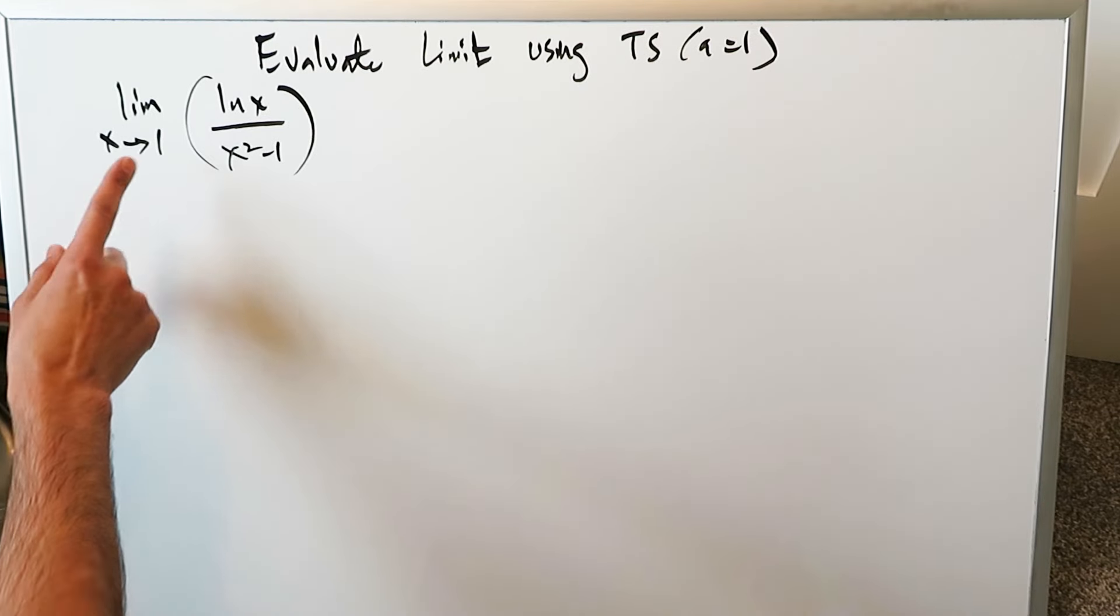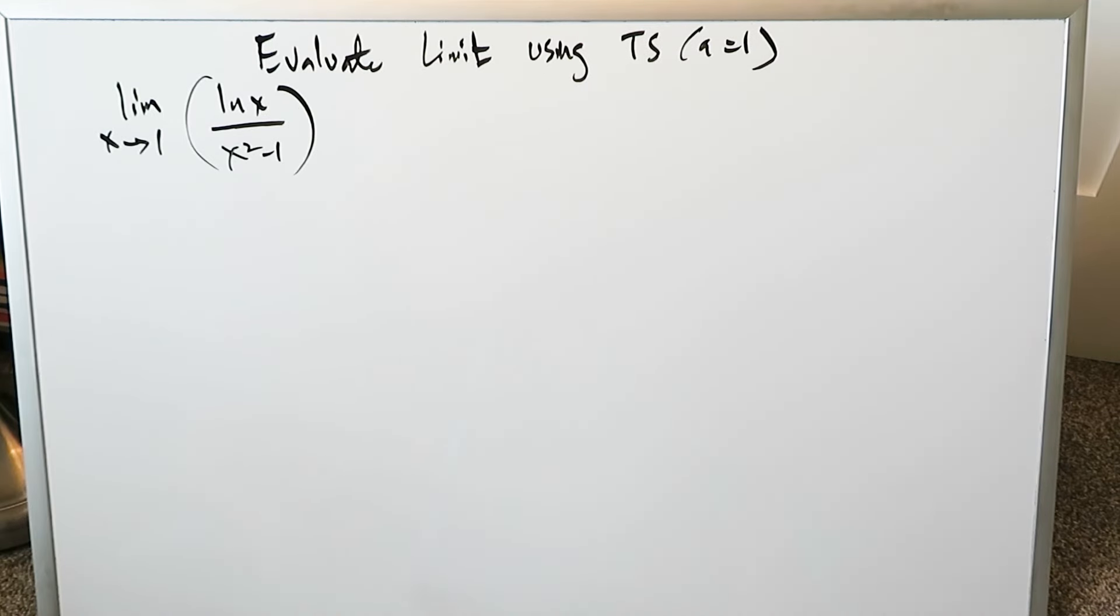What's the question? Limit as x approaches 1, natural log x divided by x squared minus 1. You know if you put that 1 in places of x you'll have an indeterminate form 0 over 0. You can use Le Hopital's rule and easily evaluate it, but the task is to use the Taylor series centered around A equals 1.